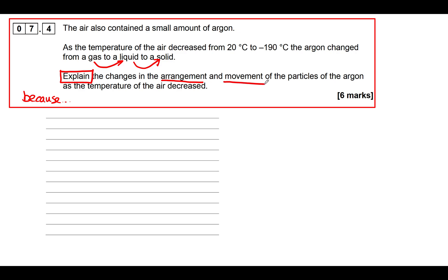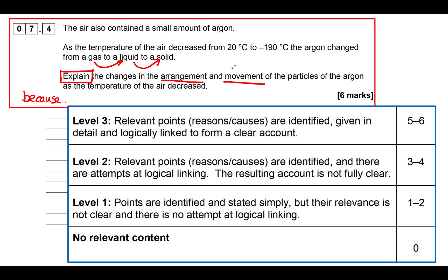The question asks us to explain the changes in the arrangement and movement of the particles in the argon as the temperature decreased. So we need to cover two changes of state — gas to liquid, and liquid to solid — which gives us two paragraphs. Within each paragraph we need to address both the arrangement and the movement of the particles.